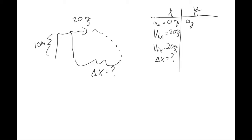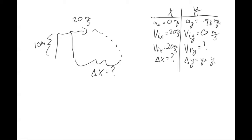The acceleration in the y is negative 9.8 meters per second squared due to gravity. The initial velocity in the y is zero because we're launching our projectile horizontally, so there's no y component to the initial velocity. We don't know the final velocity in the y direction. And we know that delta y equals negative 10 meters. We also don't know the time.